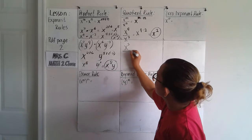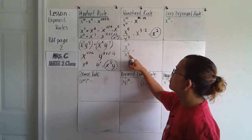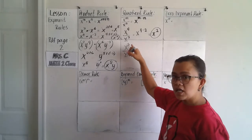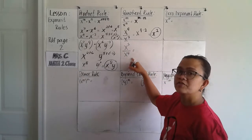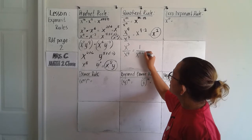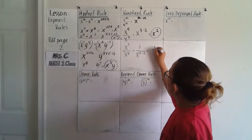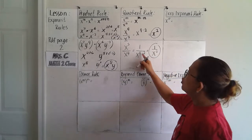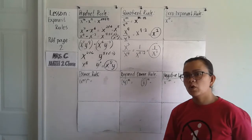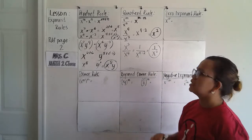I'm avoiding a negative exponent. So if your problem looks like x squared divided by x to the 4th, instead of subtracting 4 from 2, I would subtract 2 from 4 and write 1 over x to the 4th minus 2. The answer would be 1 over x squared, avoiding a negative exponent.